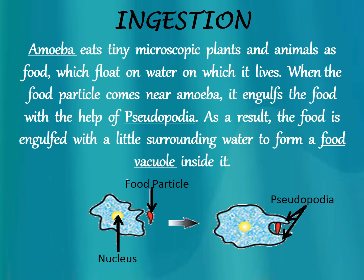Let us learn all five steps in the process of nutrition in amoeba one by one. The first step is ingestion. Amoeba eats tiny microscopic plants and animals as food — microscopic means very small, which we can't see with our naked eye — which float on water. When the food particle comes near amoeba, it engulfs the food with the help of pseudopodia. As a result, the food is engulfed with a little surrounding water to form a food vacuole inside it.